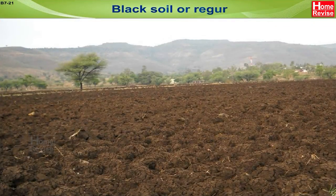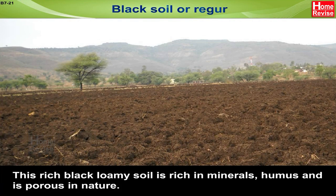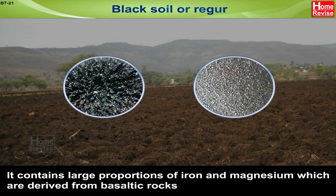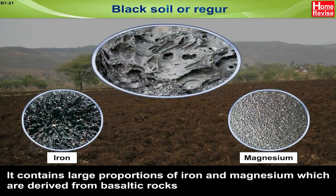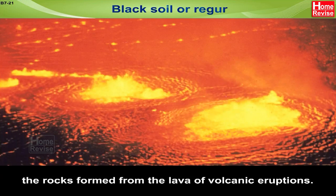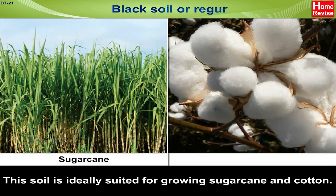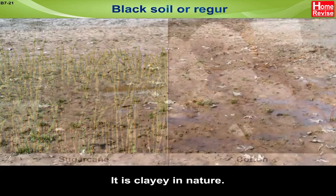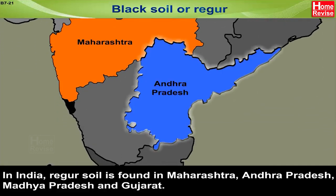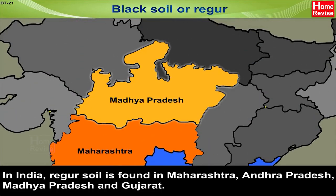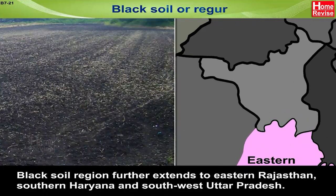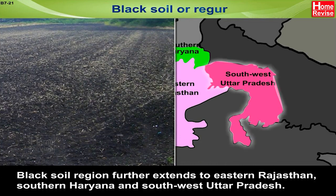Black Soil (or Rekur): This rich black loamy soil is rich in minerals and humus, and is porous in nature. It contains large proportions of iron and magnesium derived from basaltic rocks — the rocks formed from the lava of volcanic eruptions. This soil is ideally suited for growing sugarcane and cotton. It is clayey in nature. In India, this soil is found in Maharashtra, Andhra Pradesh, Madhya Pradesh, and Gujarat, and further extends to eastern Rajasthan, southern Haryana, and southwest Uttar Pradesh.